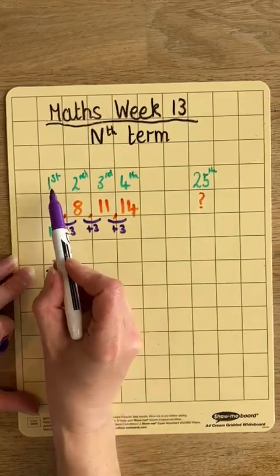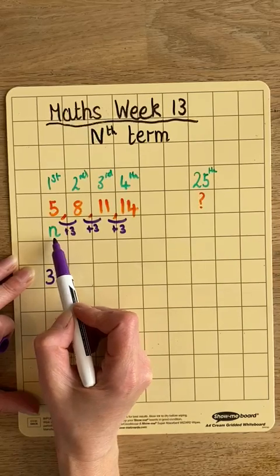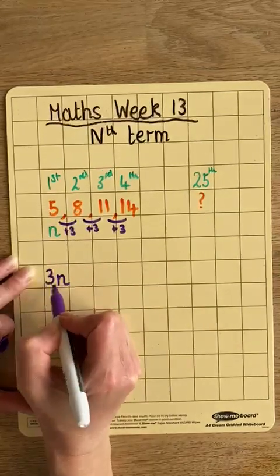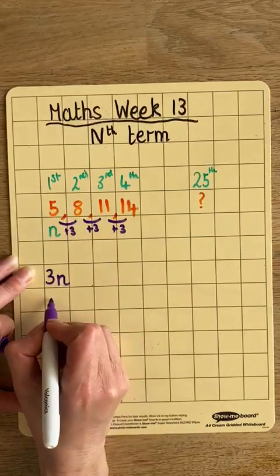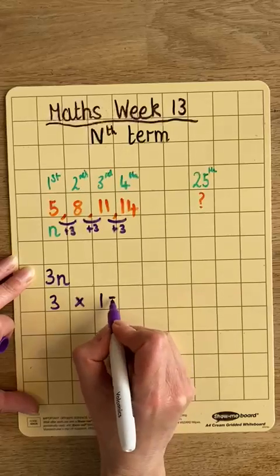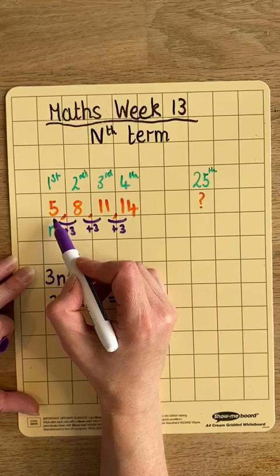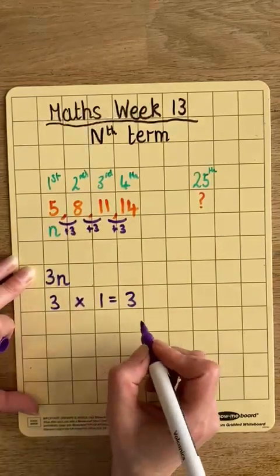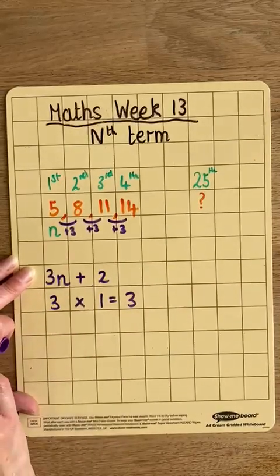So now remember n refers to the term in the sequence and we're going to start with the first one. So 3n, we're looking at 3 times 1. Now 3 times 1 is 3 and our first number is 5. So to make it 5, we have to add 2. So let's put add 2 onto our sequence.